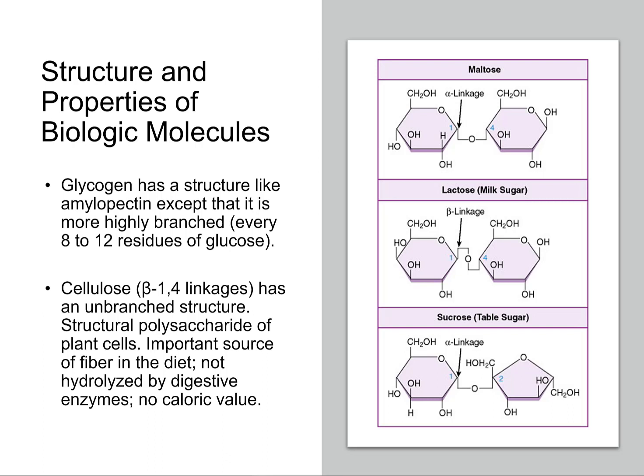Structural properties of biological molecules — like glycogen, we talked about amylopectin, which is highly branched, usually eight to twelve glucose residues. Cellulose is a beta-1,4 link with an unbranched structure.